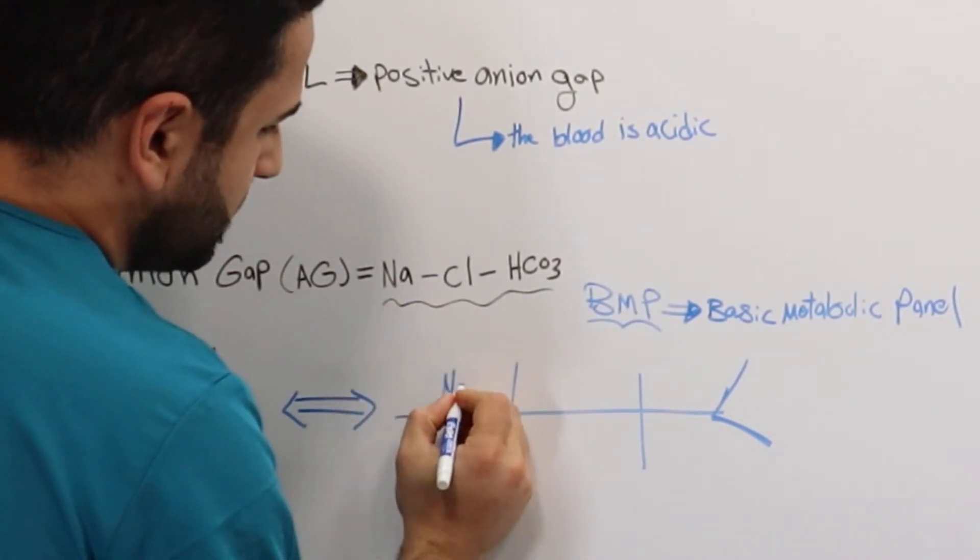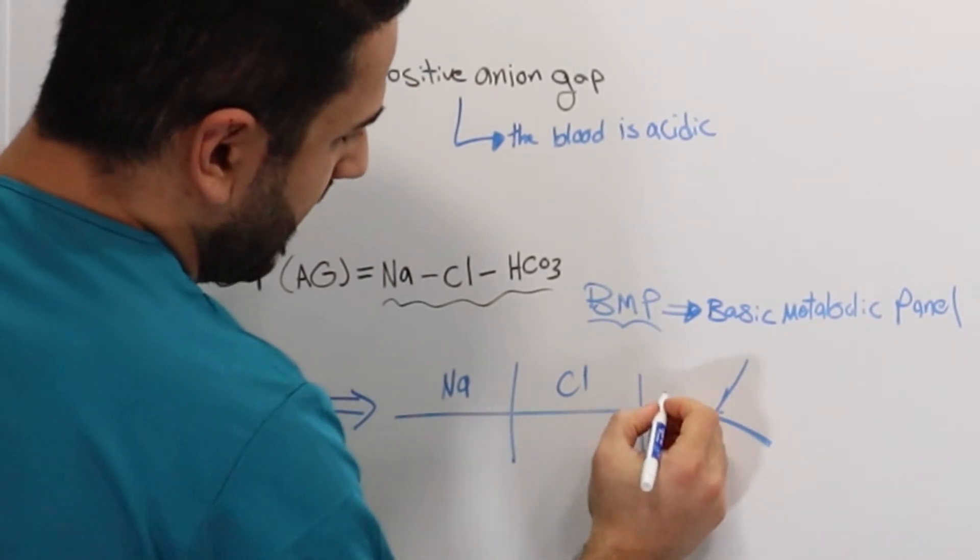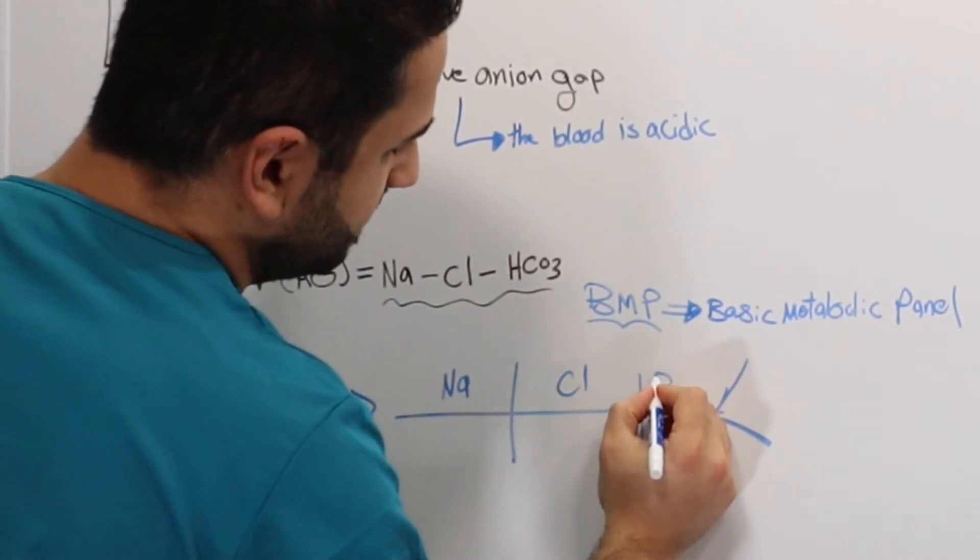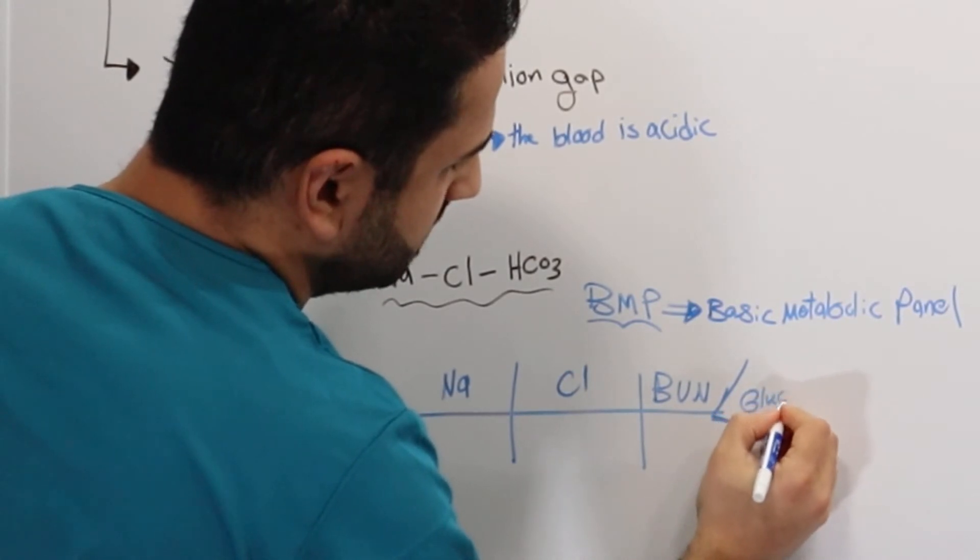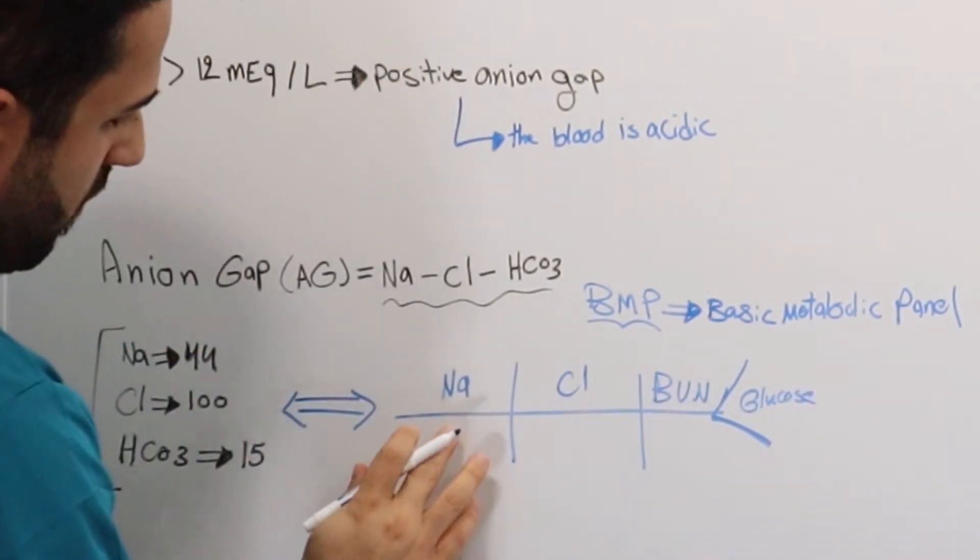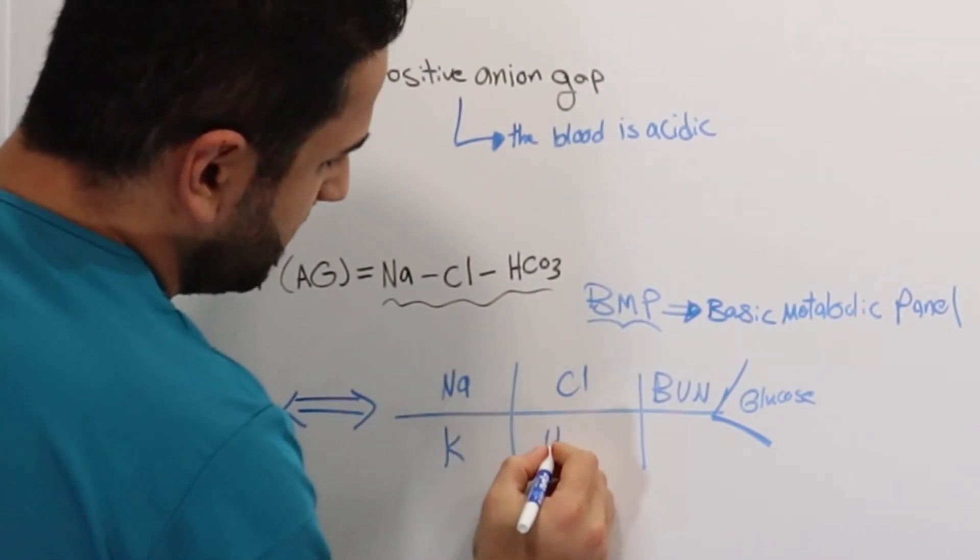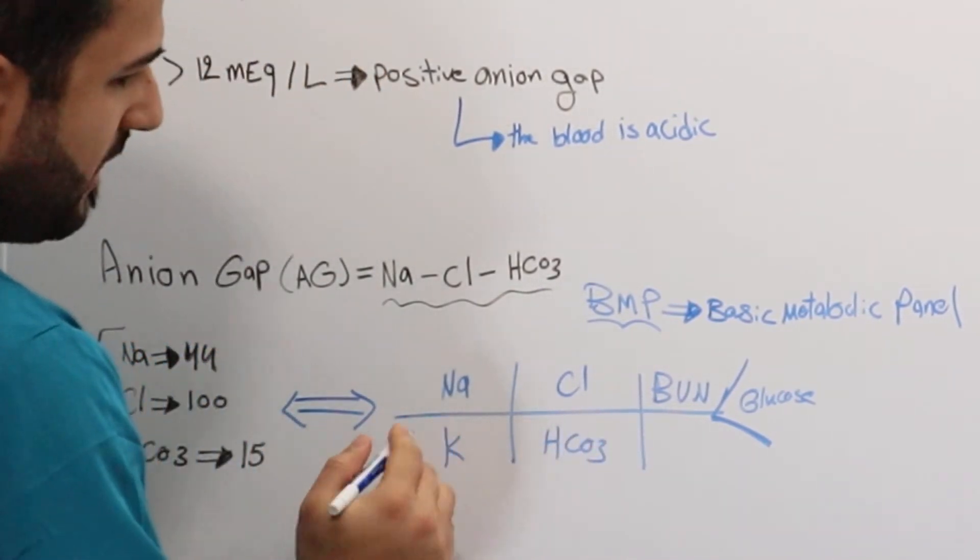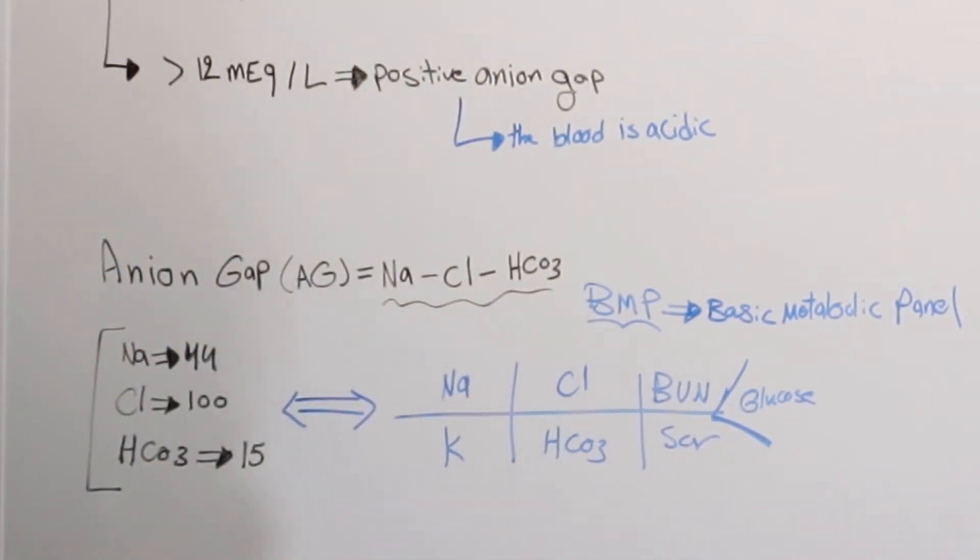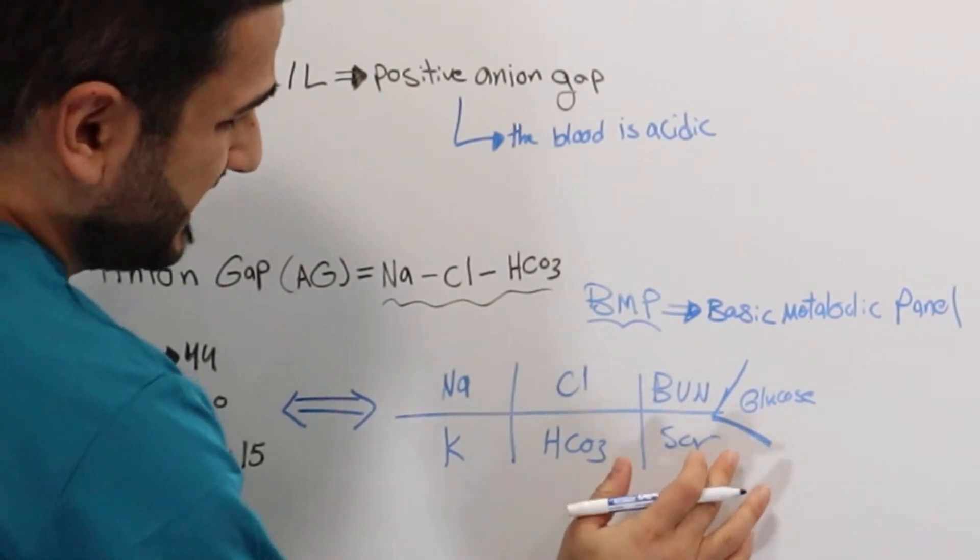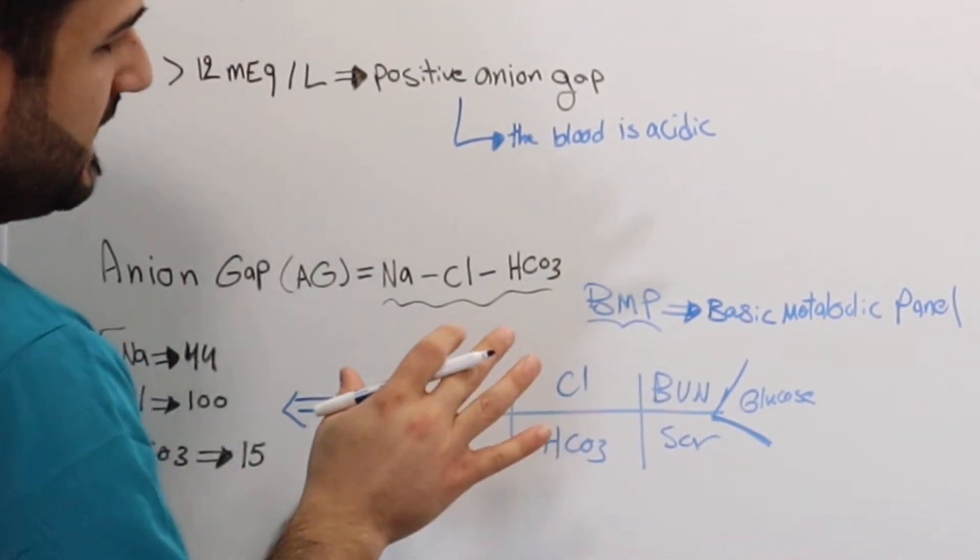And what this consists of is basically sodium, chloride, and here we have BUN. Then here we have glucose, over here we have potassium, here we have HCO3 or bicarbonate, and the last one we have serum creatinine. It's really important to keep this BMP fishbone in your mind.